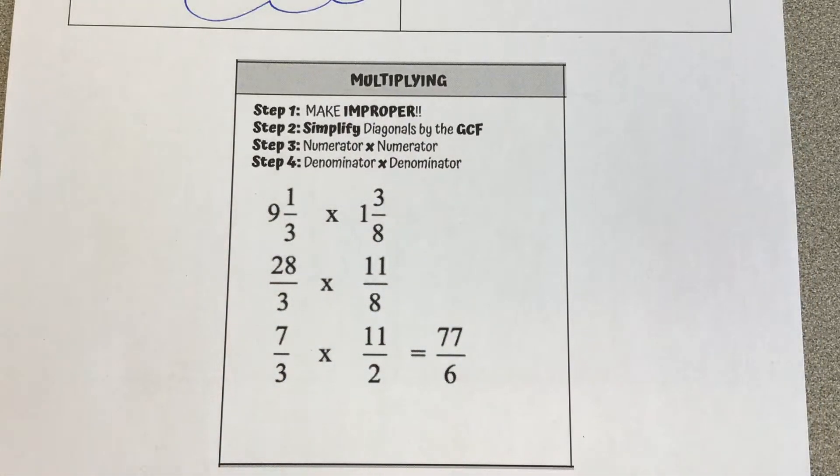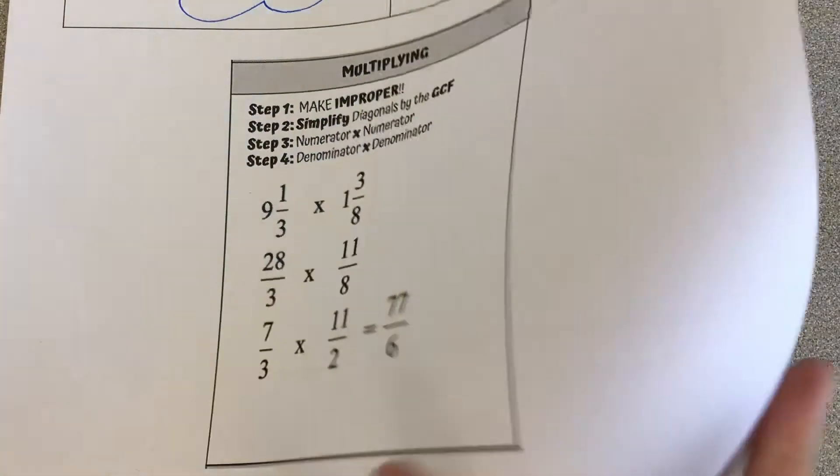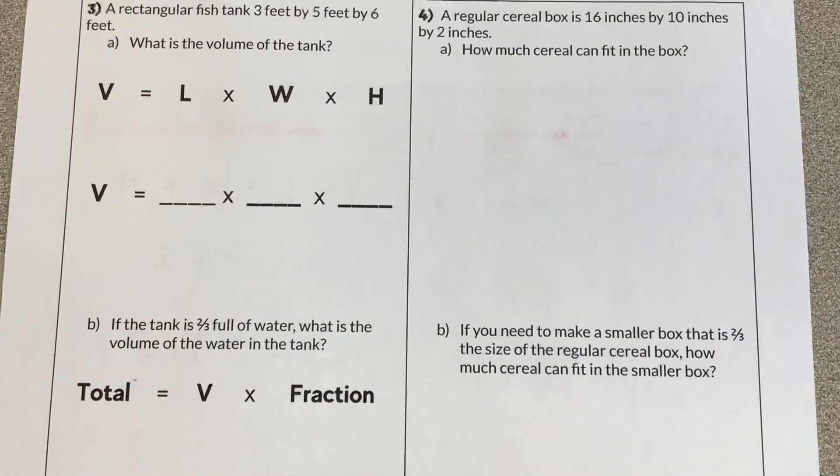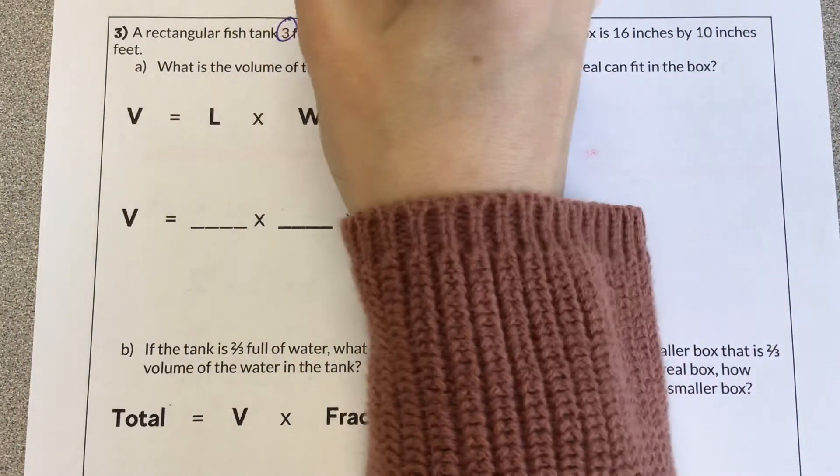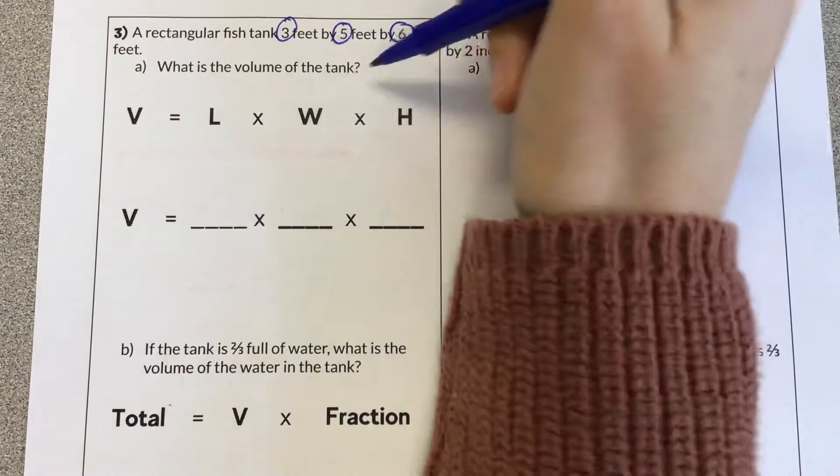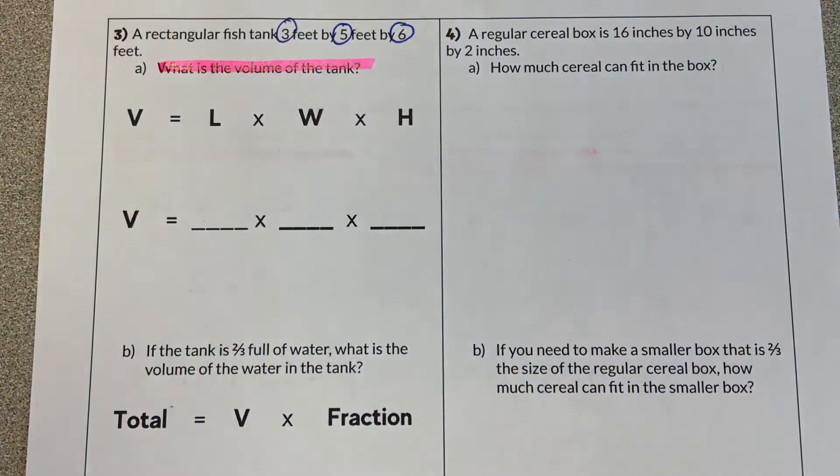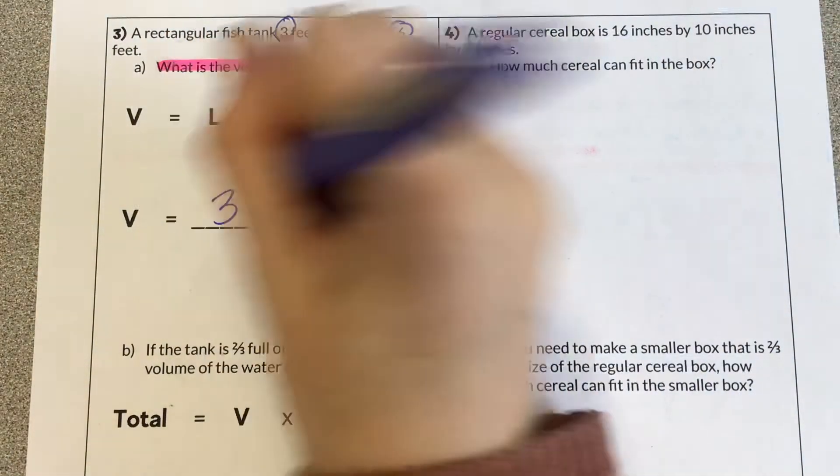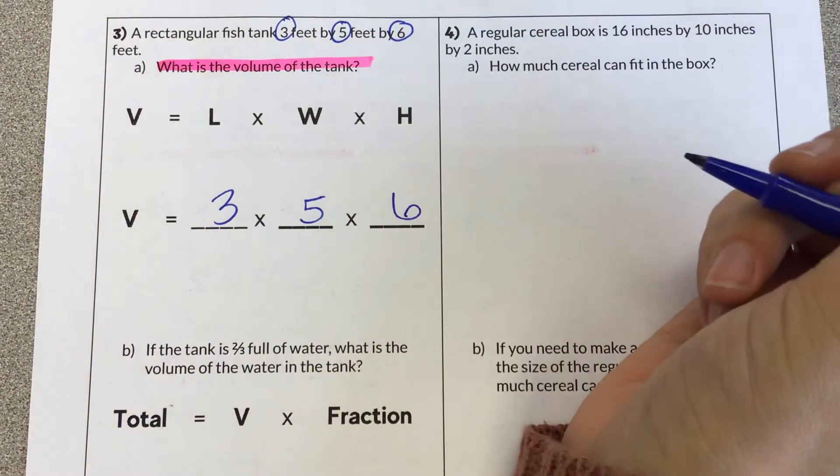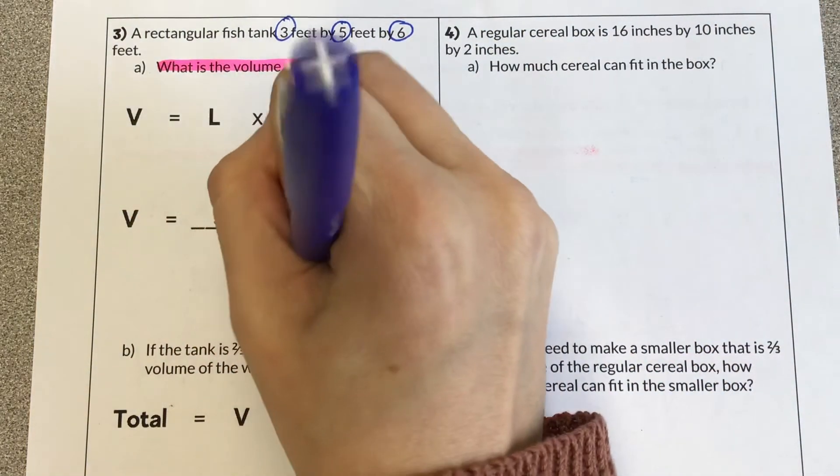Now the trickier problems for fractions. Here's some reminders of multiplying fractions if you need it. But let's look at these. So number three, a rectangular fish tank is 3 feet by 5 feet by 6 feet. So I'm circling those numbers. This is explicitly saying, what is the volume of the tank? So remembering, volume is length times width times height. So I am plugging in 3 times 5 times 6. And when I multiply that together, I get a volume of 90.